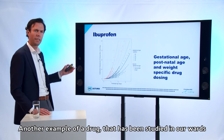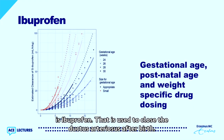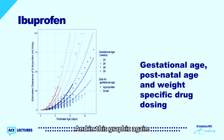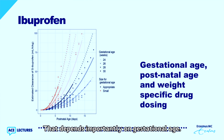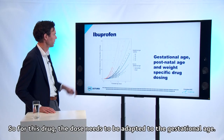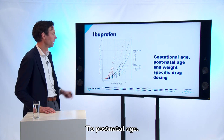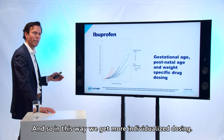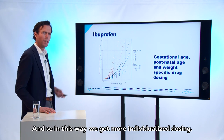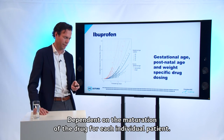Another example studied in our ward is ibuprofen, used to close the ductus arteriosus after birth. Again, the graphic shows the difference in drug clearance — it depends importantly on gestational age, and it is dramatically different for infants born small for gestational age. So for this drug, the dose must be adapted to gestational age, postnatal age, and weight, giving us more individualized dosing dependent on the maturation of each individual patient.